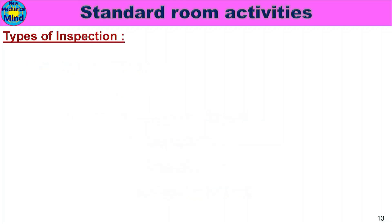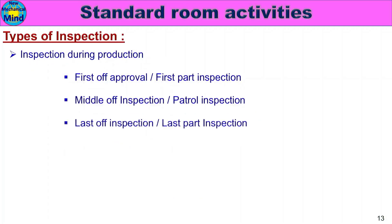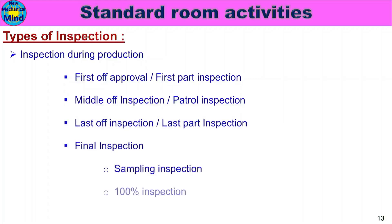Next: Inspection During Production — including First Off Approval or First Part Inspection, Middle Off Inspection or Patrol Inspection, Last Off Inspection or Last Part Inspection, Final Inspection, Sampling Inspection, 100% Inspection, Layout Inspection, and Assembly Part inspection.